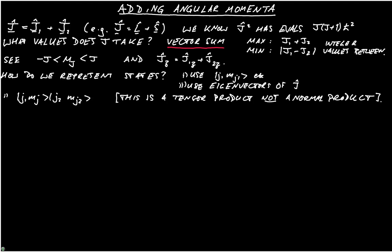Now, why can't we use that? Well, the problem is that j1z and j2z do not commute with j squared. So the product of those functions is not an eigenvector of j. So we could say as j1z or j2z, do not commute with j squared, these are not eigenvectors.